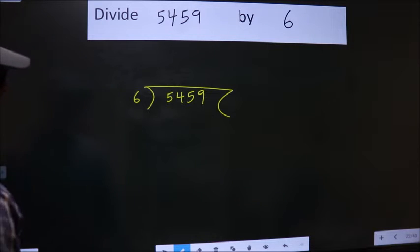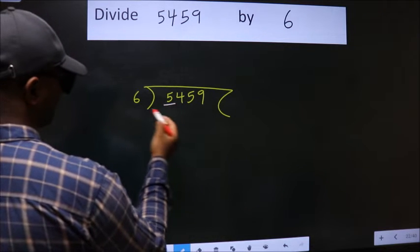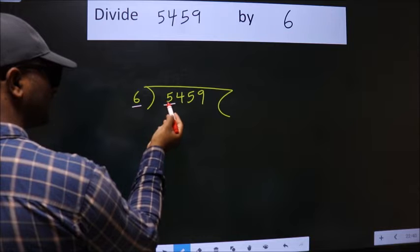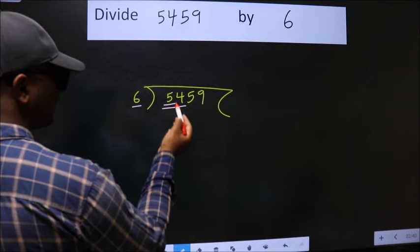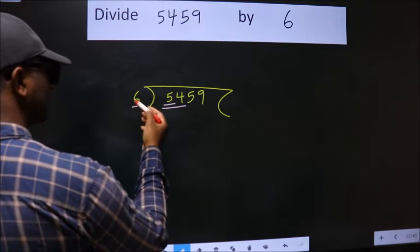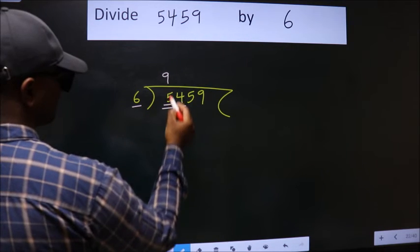Next. Here we have 5, here 6. 5 is smaller than 6. So, we should take two numbers, 54. When do we get 54 in 6 table? 6 nines, 54.